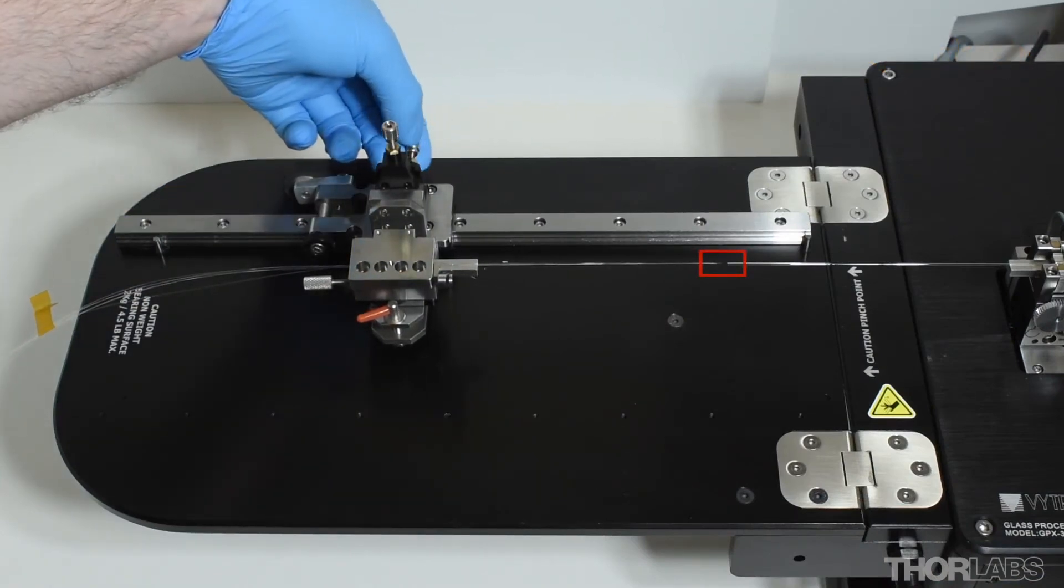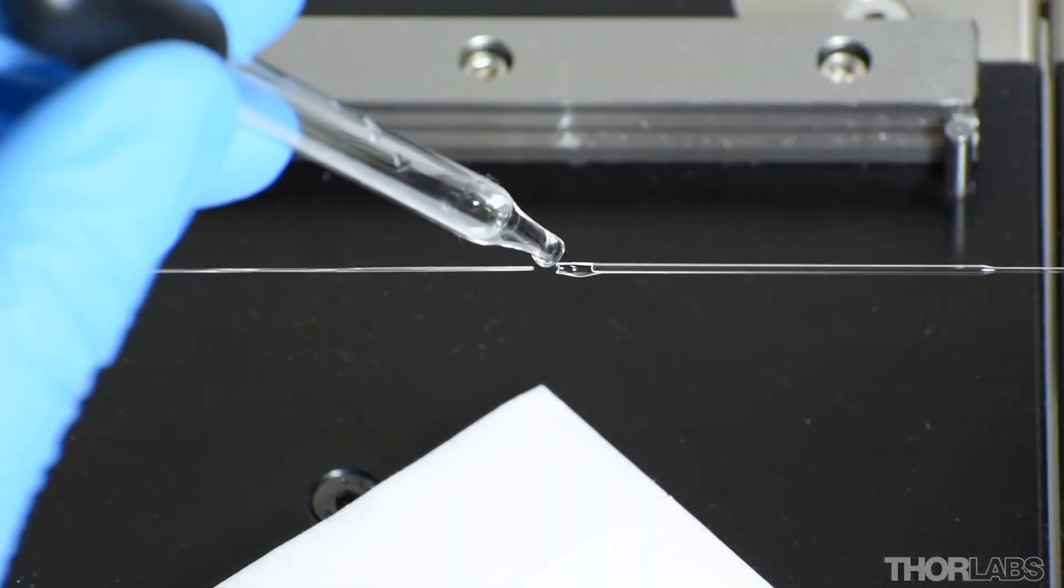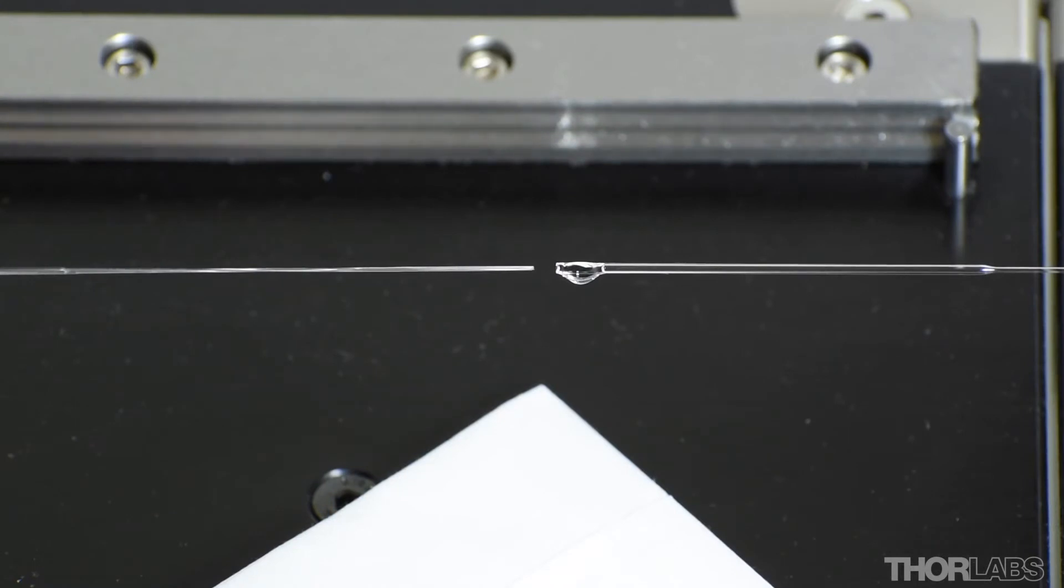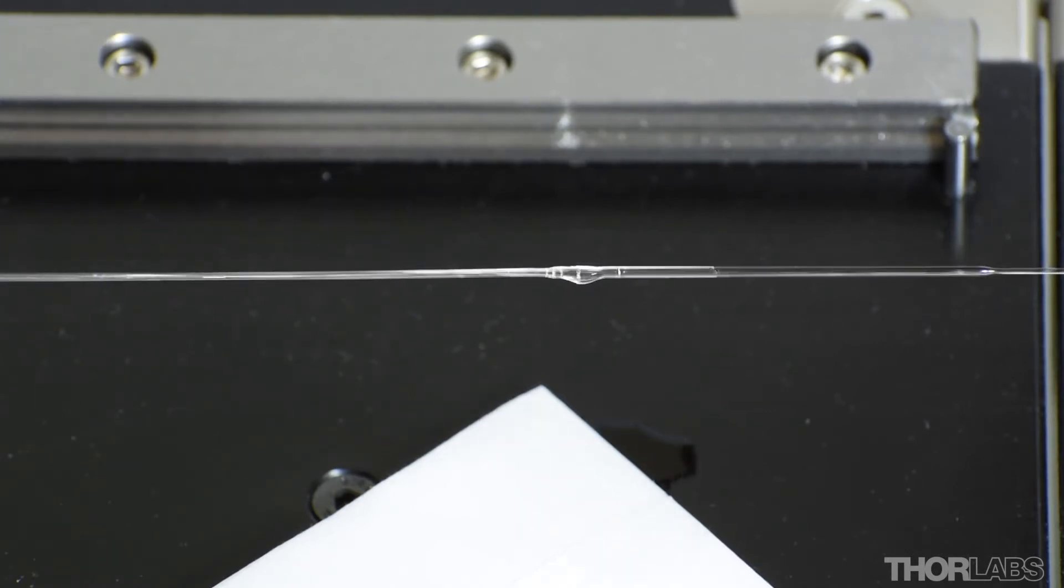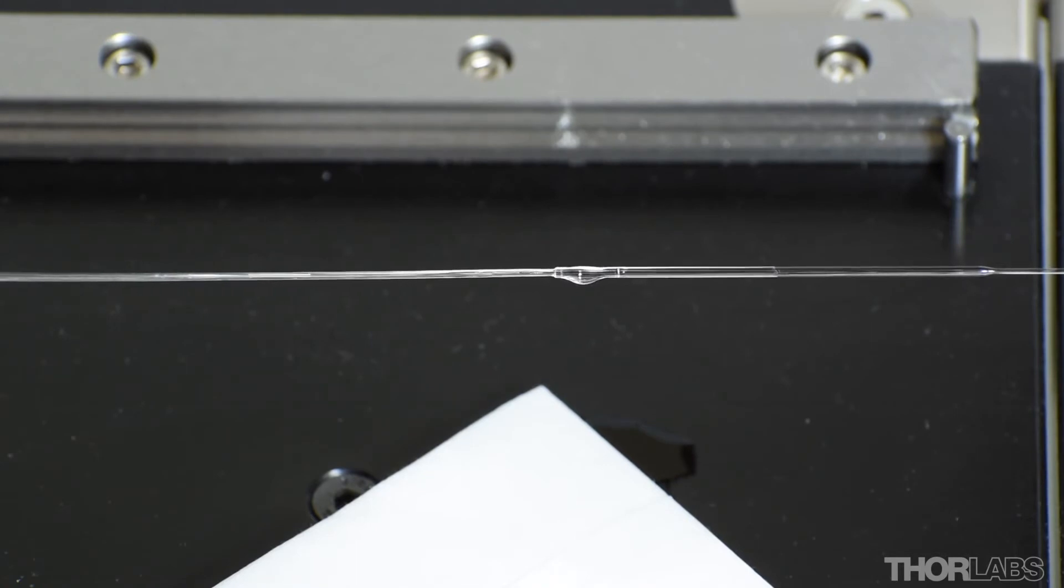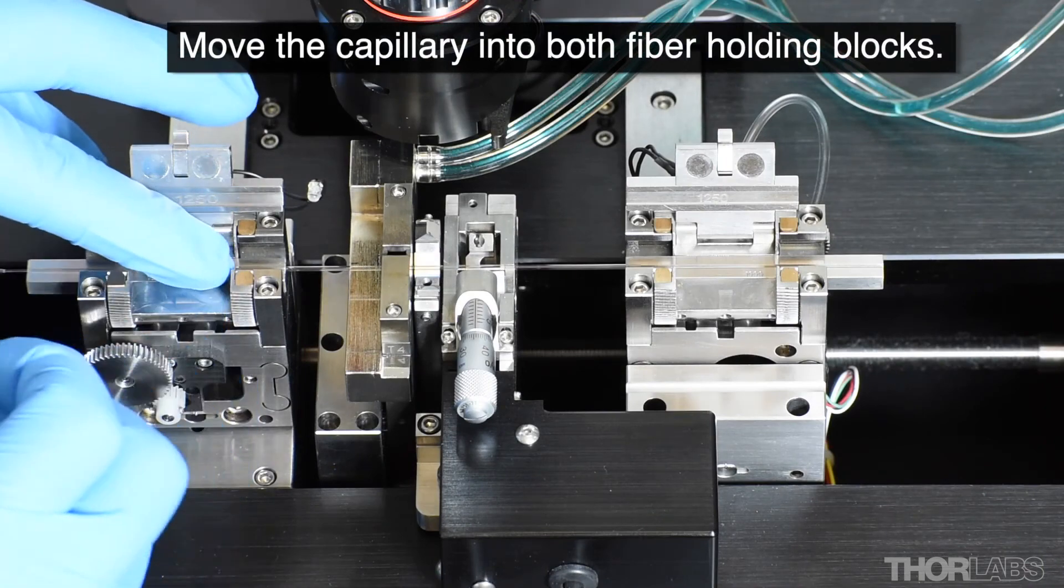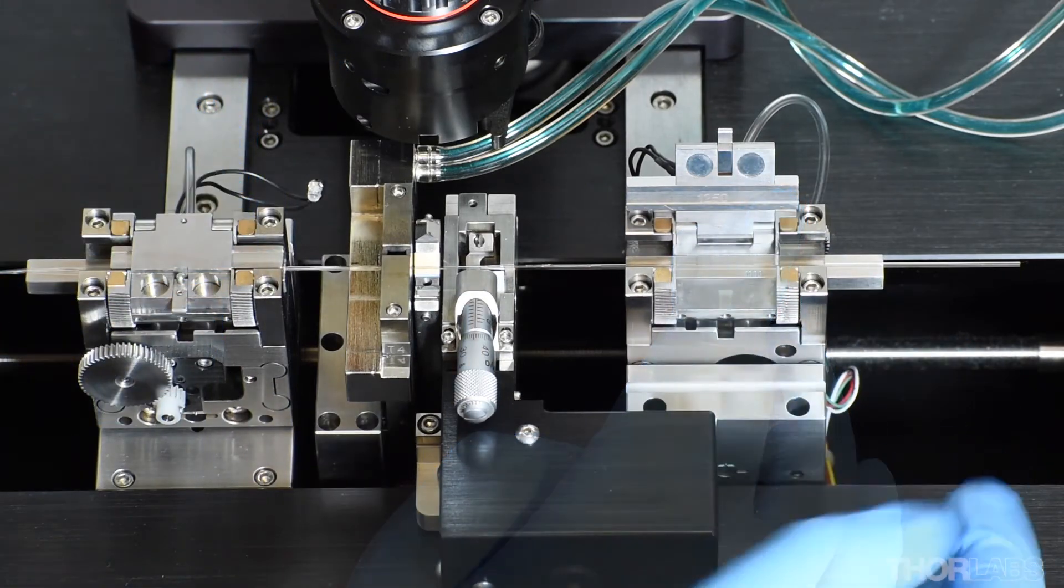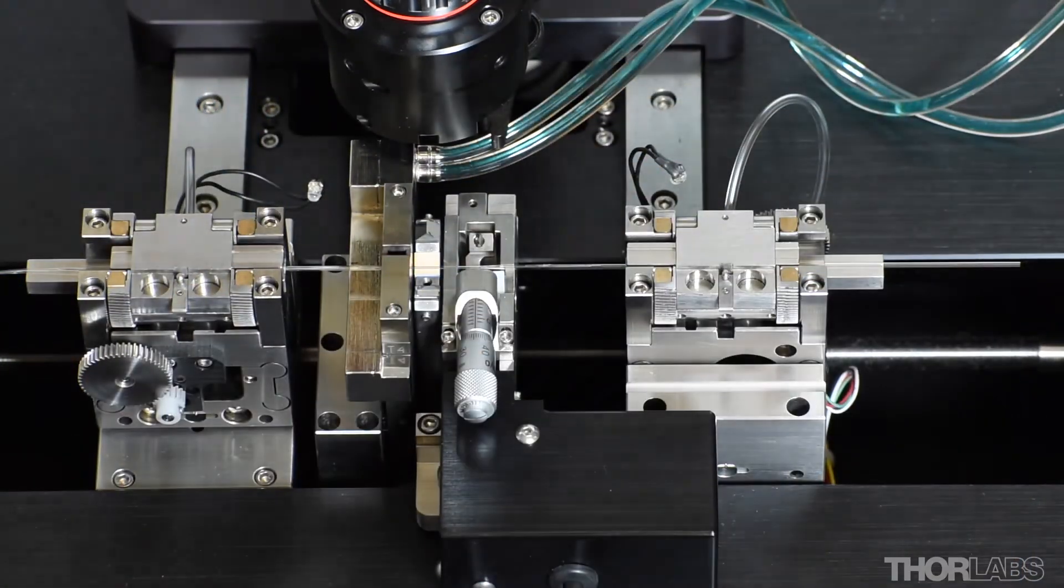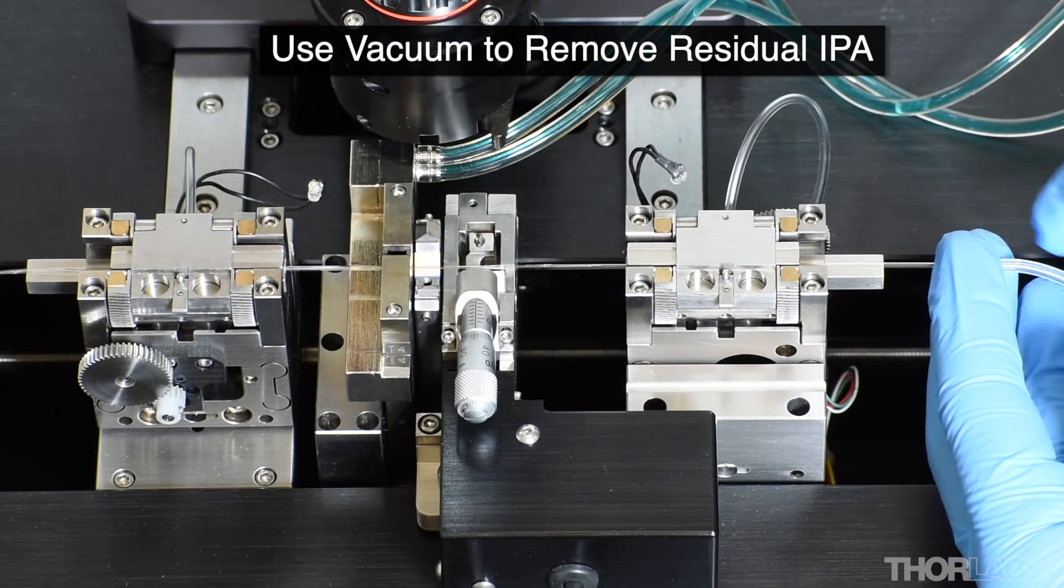The adjustment screws can be used to align the bundle to the opening of the capillary. A few drops of IPA are wicked into the capillary tube to act as a lubricant. Then, the fibers are inserted into the capillary tube, which is held in the left GPX fiber holding block. The bundling capillary can then be threaded through the filament and clamped in the fiber holding blocks. Connecting a vacuum to the other end of the capillary for several minutes helps remove any residual IPA.